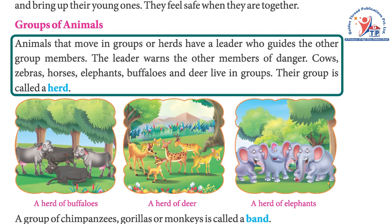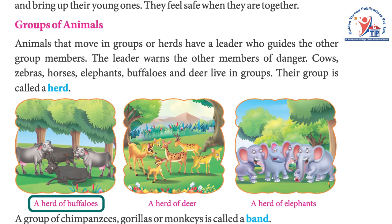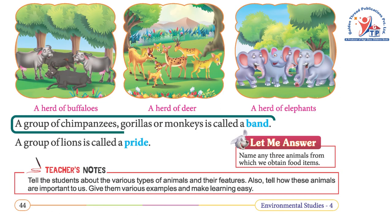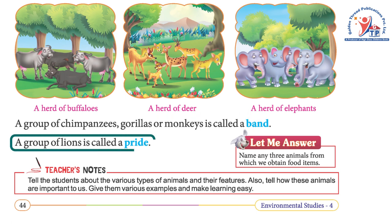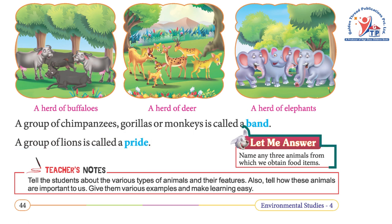Animals that move in groups or herds have a leader who guides the other group members. The leader warns the other members of danger. Cows, zebras, horses, elephants, buffaloes, and deer live in groups. Their group is called a herd — a herd of buffaloes, a herd of deer, a herd of elephants. A group of chimpanzees, gorillas, or monkeys is called a band. A group of lions is called a pride.